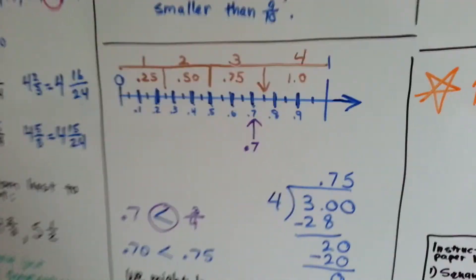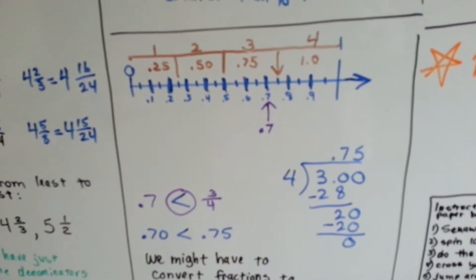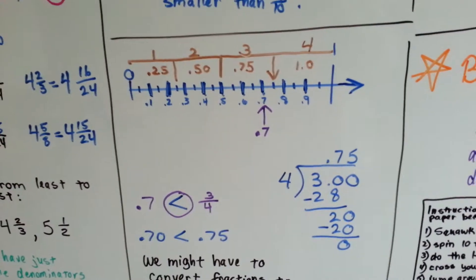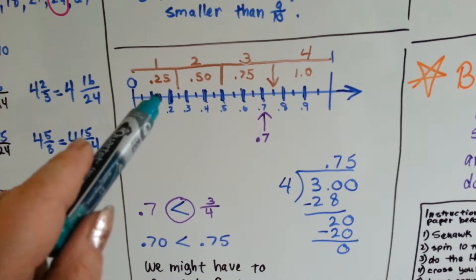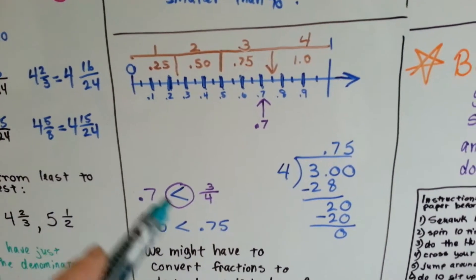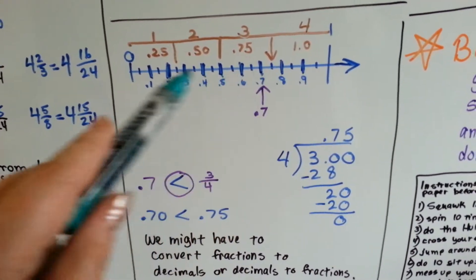If we use a number line, the only thing we have to be careful of is to make sure that the increments are small enough that we get all the increments in there to be able to compare them. In this one, we have to have a little .15 right here because there's a .5. We can't just do tenths. We have to do hundredths in between.